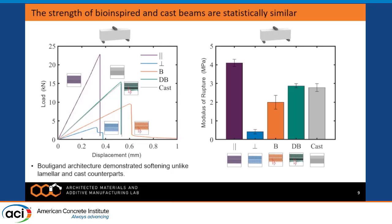For the modulus of rupture results, load-displacement plots are shown on the left alongside a summary with error bars. With the exception of the perpendicular lamellar case, all modulus of rupture results are statistically the same. This means we're not compromising the overall strength of the material by introducing these architectures. In the load-displacement curves, the bio-inspired samples also show a slight tapering off of load rather than a sudden brittle failure.